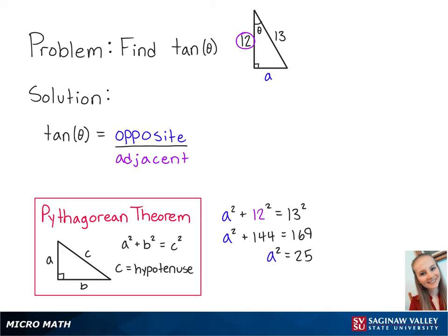Finally, we're going to take the square root of both sides so that we get A equals 5. Now that we have solved for the opposite side length, we now know that tangent of theta is equal to 5 over 12. And this is the final answer.